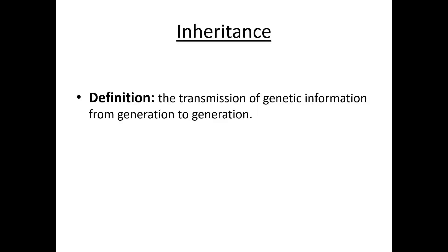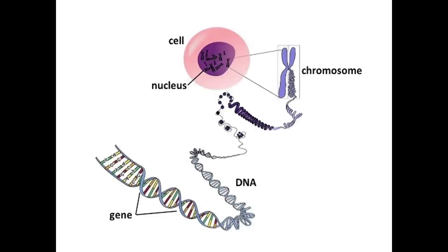The definition of inheritance is the transmission of genetic information from generation to generation. Starting from a cell, we have a nucleus whose two main functions are to control cell activity and to contain genetic information. Inside, it contains chromosomes. In humans we have 23 pairs of chromosomes, and inside a chromosome there is DNA, and when it goes smaller we have a gene.